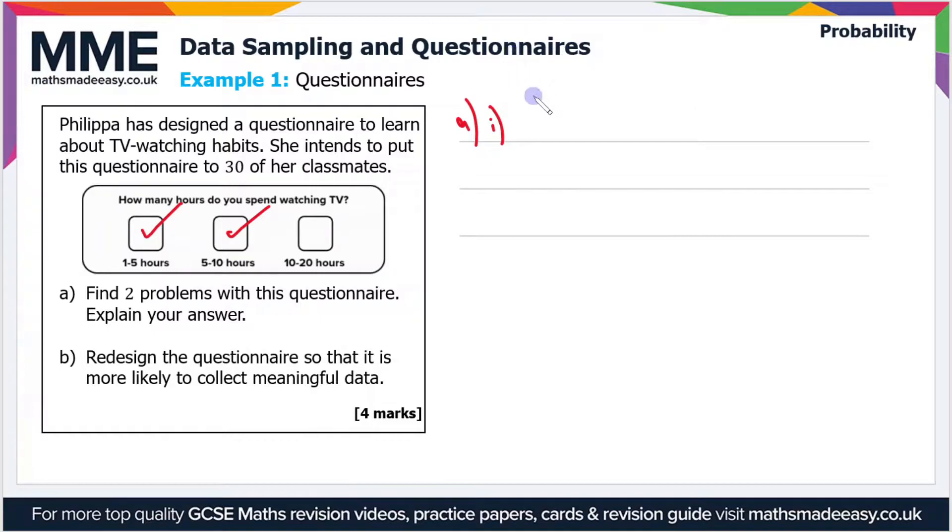That's our first problem. Let's say a one is that there's overlapping responses. And then if we have a look again at the questionnaire, how many hours do you spend watching TV? Well, it's not clear whether that's per week, per day, per month. I hope it's not per day if one of the options is 20 hours, but that's our next problem then, that there's no time frame.